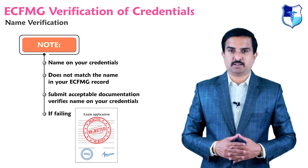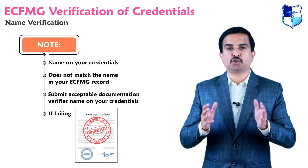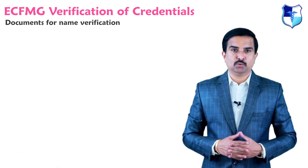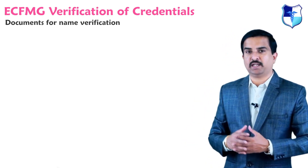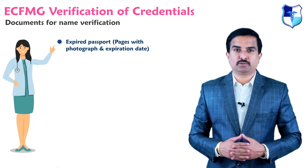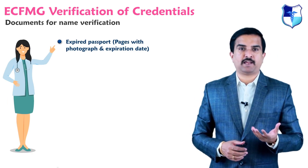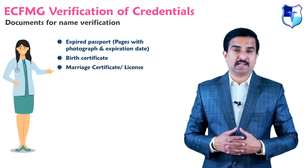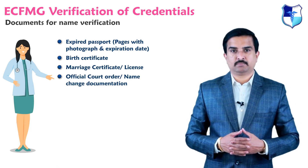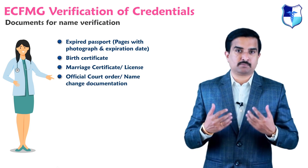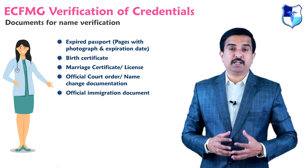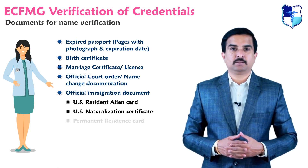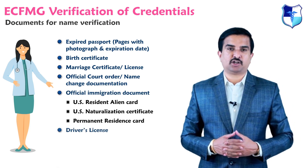The name on the documentation and that on your diploma or transcript should be the same. Documents for name verification include any of the following: an expired or valid passport including pages with your photograph and expiration date, birth certificate, marriage certificate or license, official court order for name change documentation, official immigration document including US resident alien card, US naturalization certificate, permanent resident card, or a driving license.